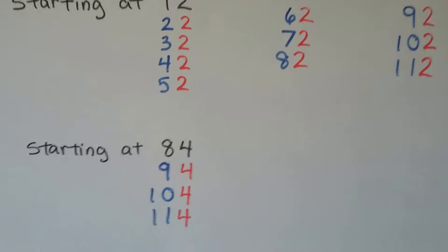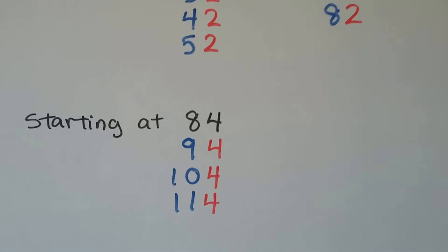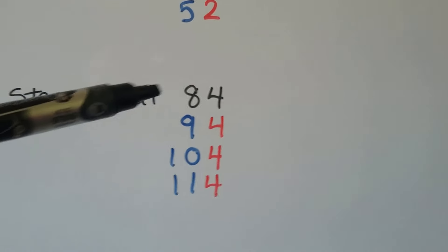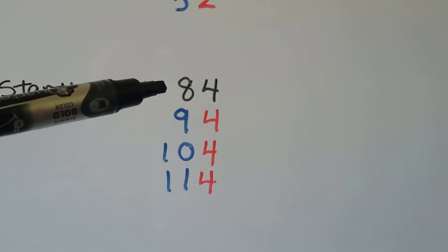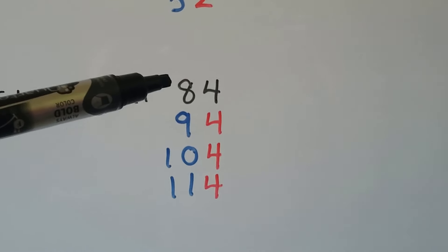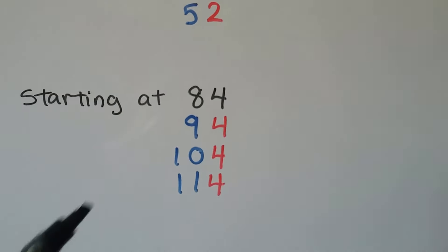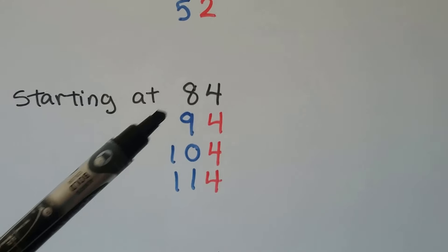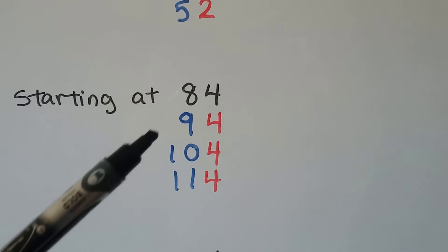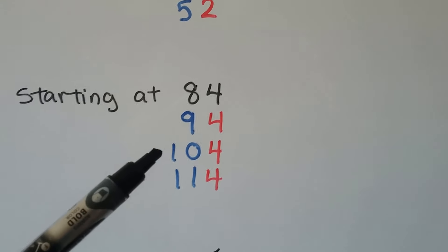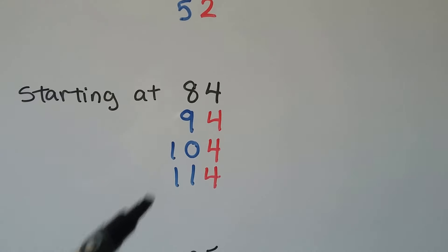If we're starting at 84, the tens will go up 1 and the ones will stay the same. We'll have 84, 94, 104, 114.